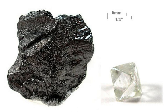In combination with oxygen in carbon dioxide, carbon is found in the Earth's atmosphere (approximately 810 gigatons of carbon) and dissolved in all water bodies (approximately 36,000 gigatons of carbon). Around 1,900 gigatons of carbon are present in the biosphere. Hydrocarbons such as coal, petroleum, and natural gas contain carbon as well. Coal reserves amount to around 900 gigatons with perhaps 18,000 Gt of resources. Oil reserves are around 150 gigatons. Proven sources of natural gas contain about 105 gigatons of carbon, with estimates of another 900×10¹² m³ of unconventional deposits such as shale gas, representing about 540 gigatons of carbon.